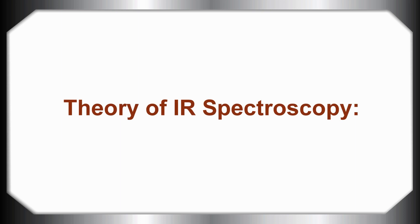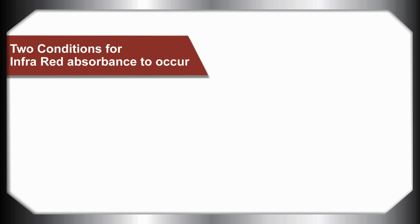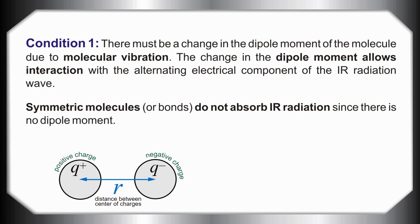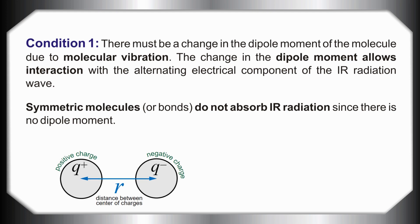Hi dear friends, welcome to our channel Pharma Digest. Today we are learning about theory of IR spectroscopy. There are two conditions for infrared absorbance to occur. Condition number one: there must be a change in the dipole moment of the molecule due to molecular vibration. The change in the dipole moment allows interaction with the alternating electrical component of the IR radiation beam.